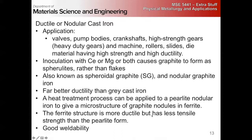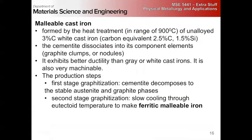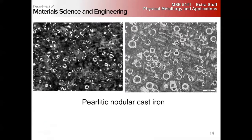Ferritic nodular iron is really the only cast iron with really good weldability, because you're not trying to weld pearlite. In the pearlitic structure you see the pearlite with a region of ferrite around the graphite nodule — this is a region reduced in carbon, so it's plain ferrite around the nodule in a matrix of pearlite.